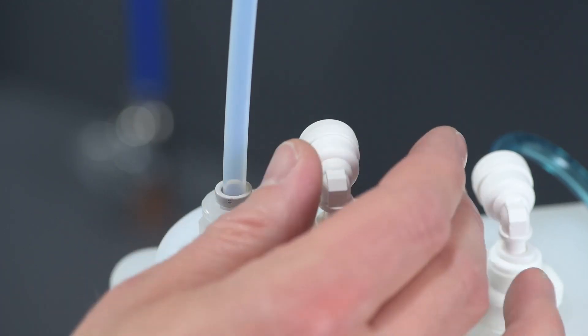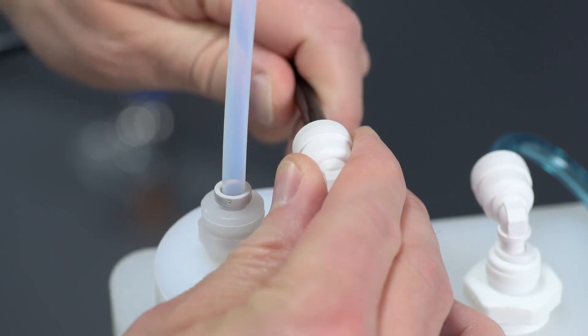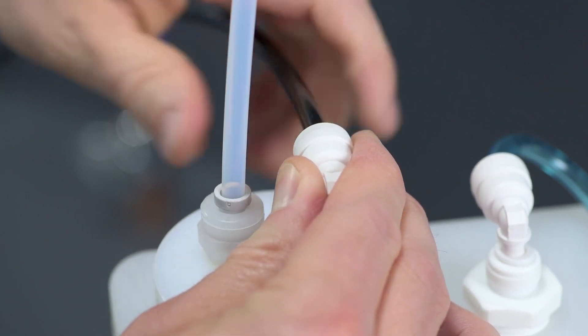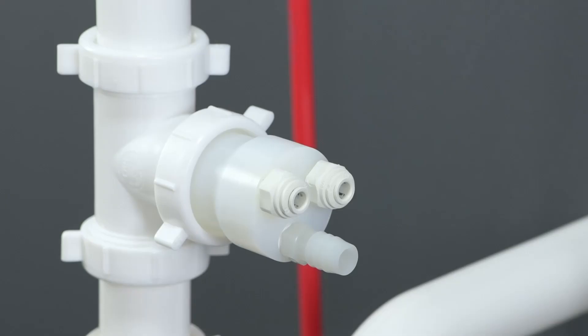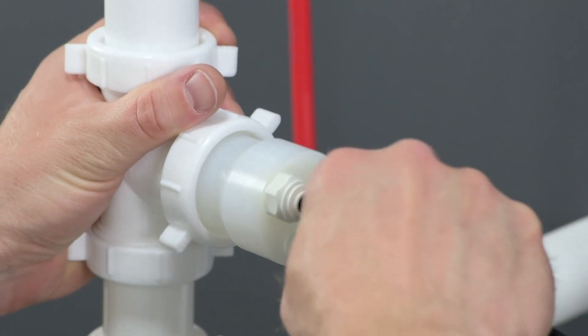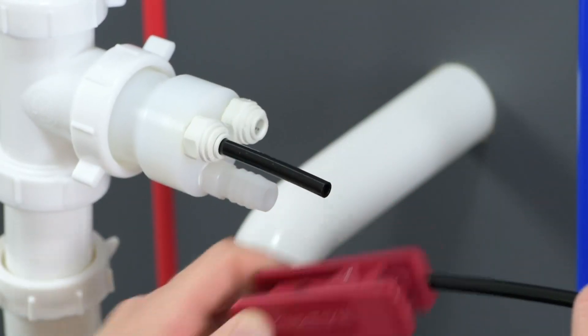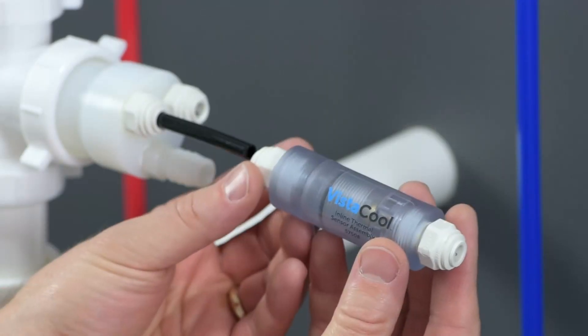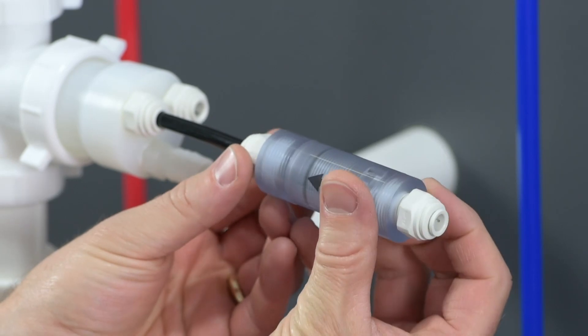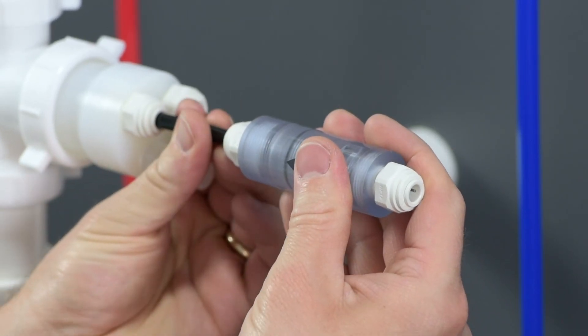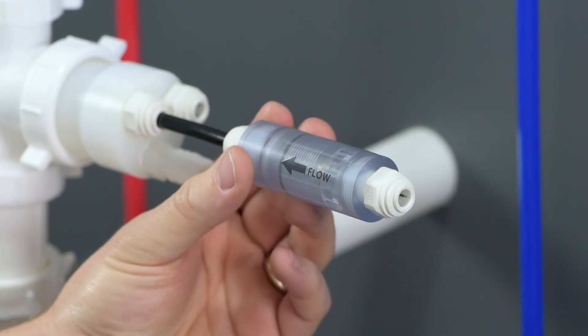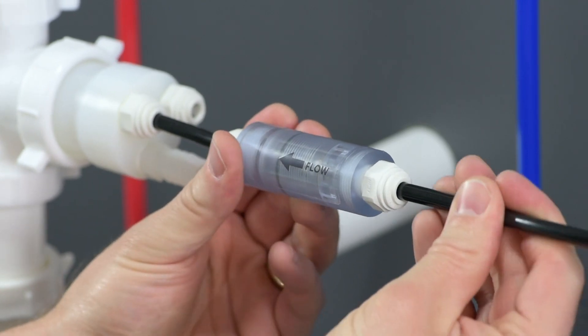Now connect the 1¼ inch black opaque condensate line tubing to the elbow fitting on top of the manifold. Then connect the other end to one of the male adapter fittings on the drain adapter. Cut that same black condensate line as close to the drain adapter assembly as possible and install the inline thermal sensor. Make sure the flow direction on the inline sensor is oriented toward the drain.